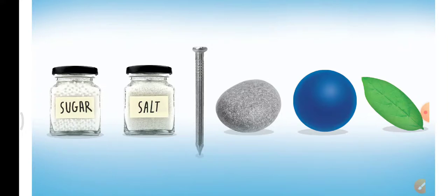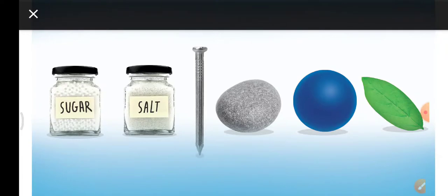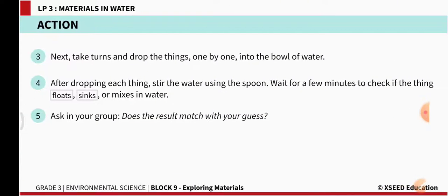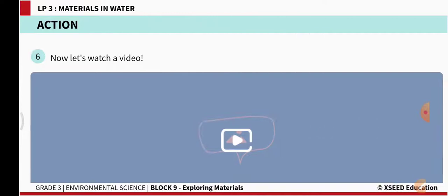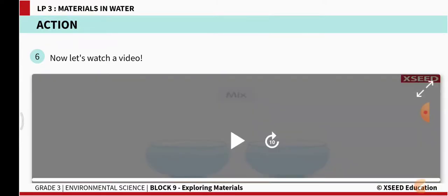Sugar and salt mix in water — if you take a spoon of sugar or salt and add it to water, it dissolves. The iron nail will sink in water, and the stone will also sink. The ball which has air in it will float in water, and the leaf also floats on water.